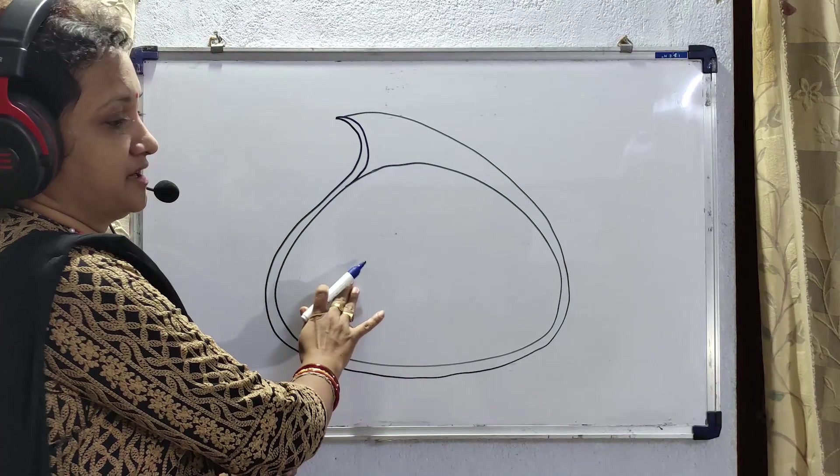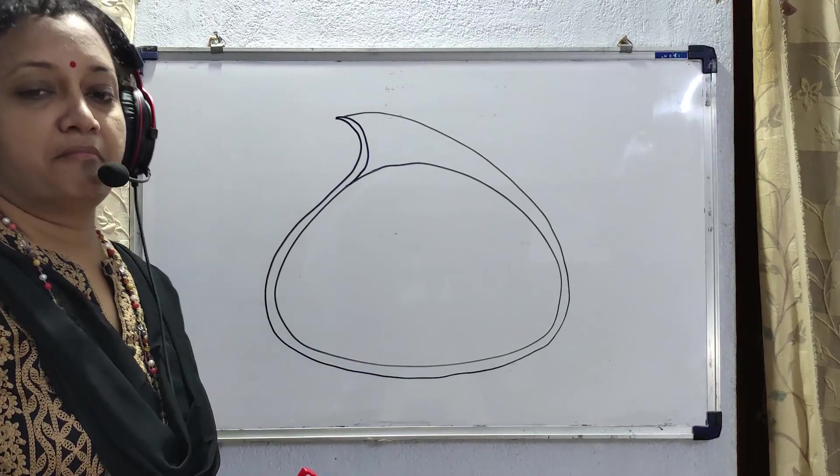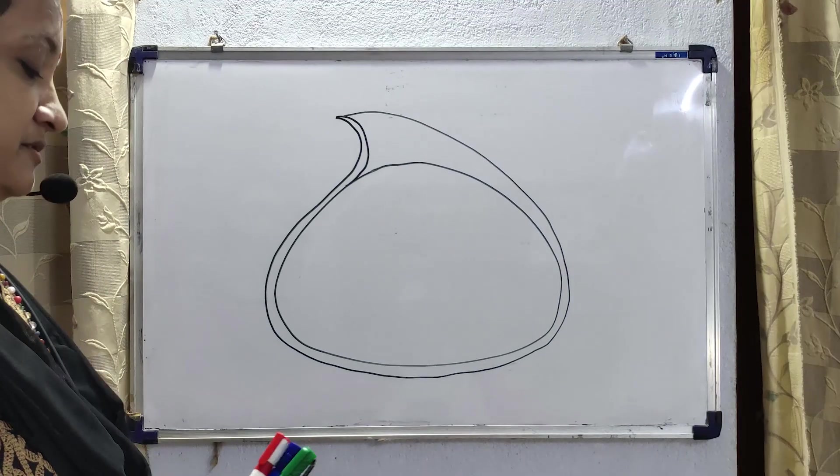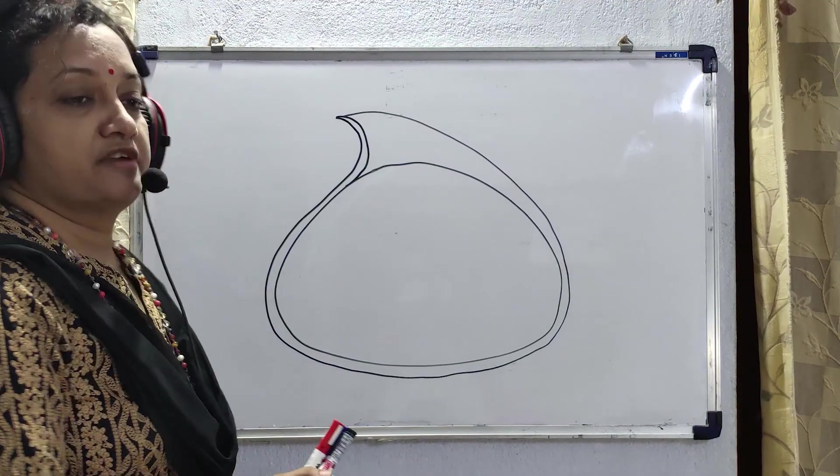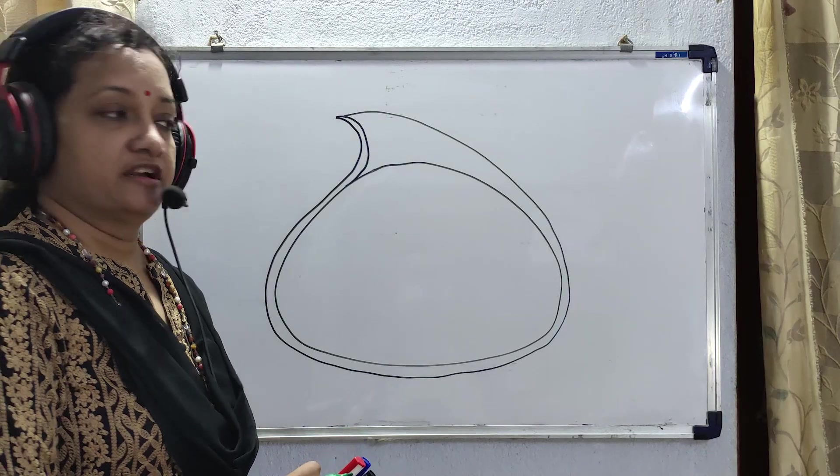The inner part of the chloroplast which is known as the matrix, and this matrix is known as stroma. In the stroma, we have to draw the diagram of the granum.